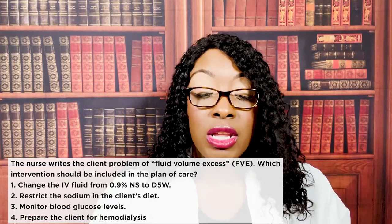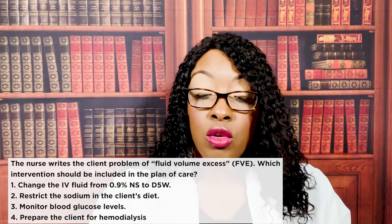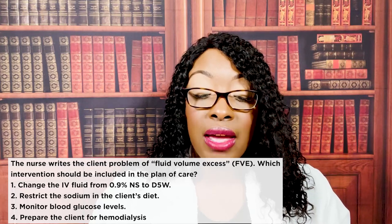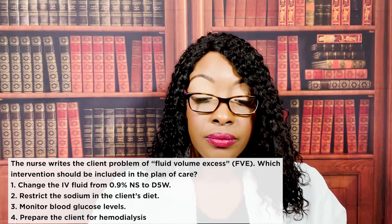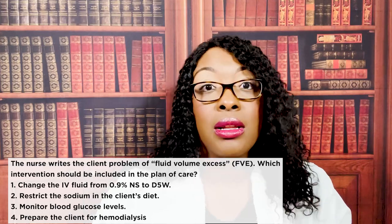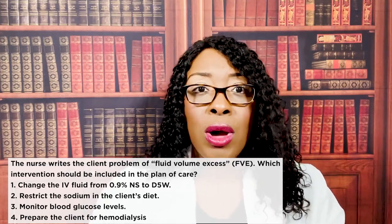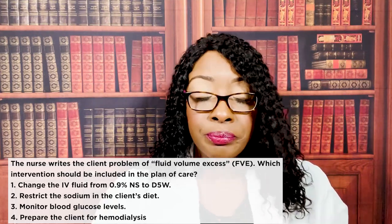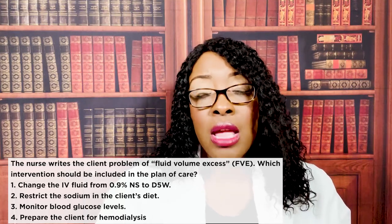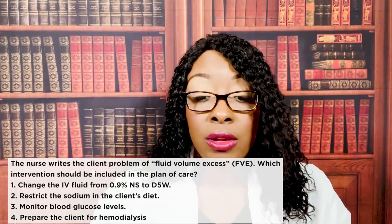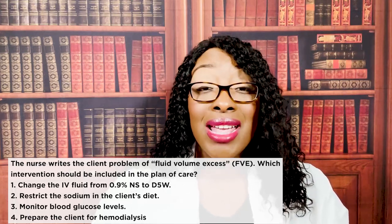Next question: the nurse writes the client problem of fluid volume excess. Which intervention should be included in the plan of care? One: change IV fluid from normal saline to D5W. Two: restrict sodium in the client's diet. Three: monitor blood glucose levels. Or four: prepare the client for hemodialysis. The correct answer is two — restrict sodium in the client's diet. The patient has fluid volume excess; the more sodium they have, the more fluid they'll hold onto. We're trying to get rid of fluid, so we decrease the sodium.